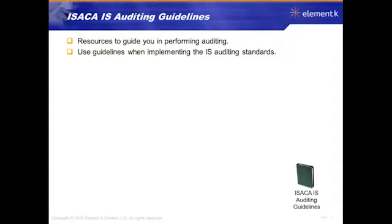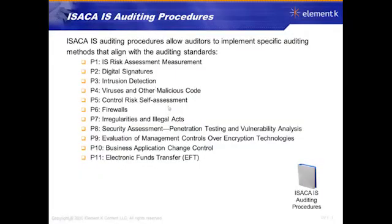We're going to take a look at guidelines, which will guide us. Guidelines are not required, but they help us when we do our audit and help us adhere to standards. We'll also look at procedures. Just like standards start with an S, guidelines start with a G, and procedures start with a P. There are many specific methods that align with the standards for risk assessment, digital signatures, intrusion detection, antivirus, firewalls, and irregularities.